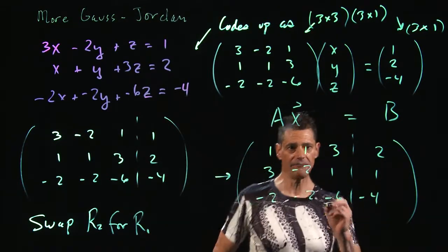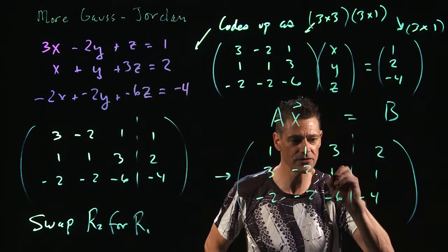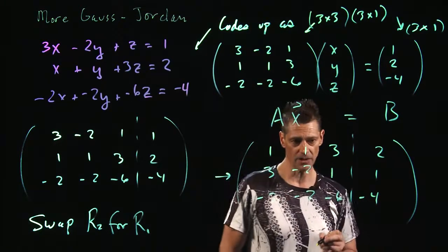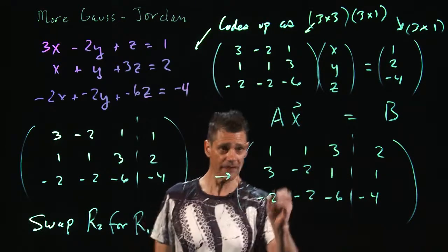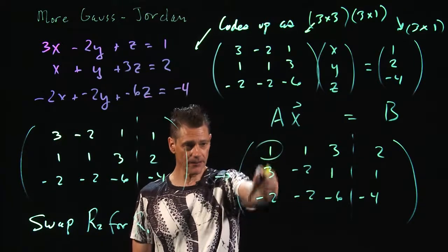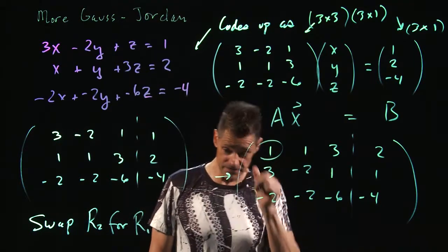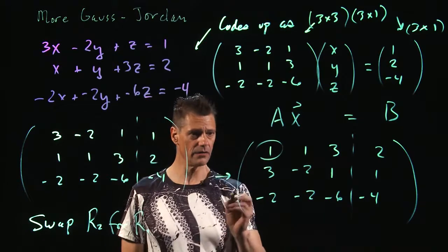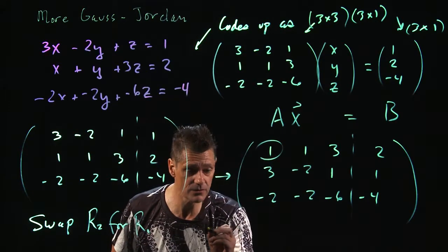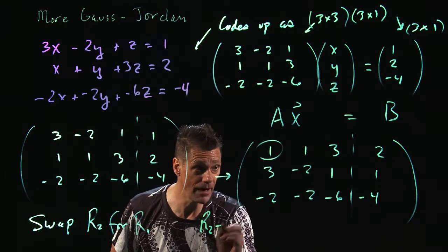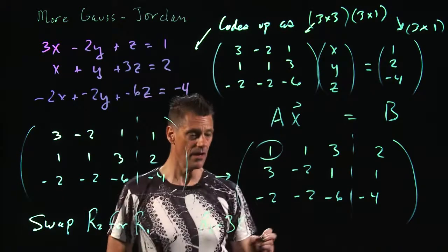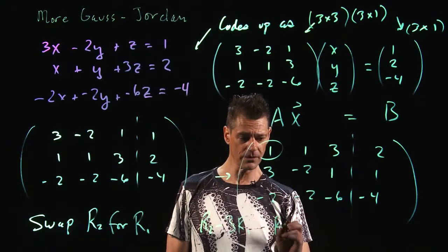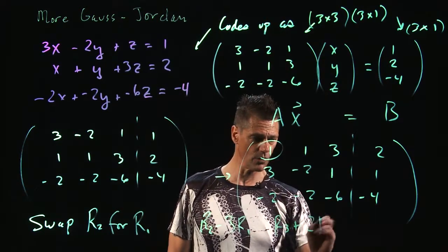I'm probably only going to have enough board space here to do one more operation. Then we'll jump to the next board. So here's my first pivot point. And of course, I need everything underneath it to be zeros. So I'm going to go from here. Here I'm going to do row 2 minus 3 row 1, and row 3 plus 2 row 1.